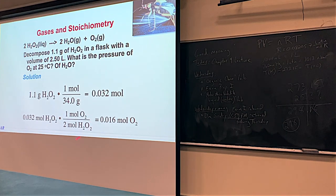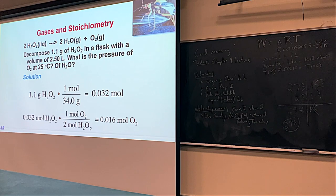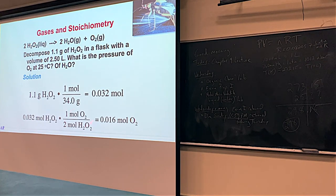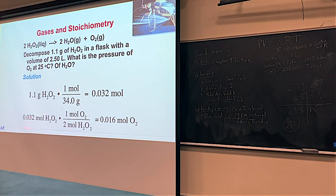What would the ratio be if we picked water instead of oxygen? It's 2 to 2, or 1 to 1 — outstanding. So if you had done water, it's a 2:2 ratio, meaning you'd have 0.032 moles of water made from 0.032 moles of H₂O₂.